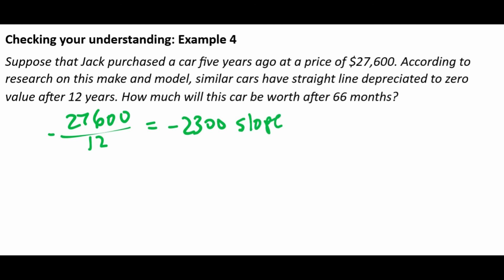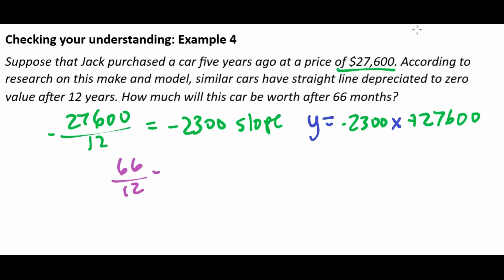We know the y-intercept — it's always the starting price of the vehicle. So the equation of this line is y equals negative $2,300 times x plus 27,600. Now we want to know what the car is going to be worth after 66 months. If we take 66 months and divide it by 12, we get 5.5 years — five years is 60 months, and the extra six months is half a year. So we're going to replace x with 5.5 to find the value of the car after 5.5 years.